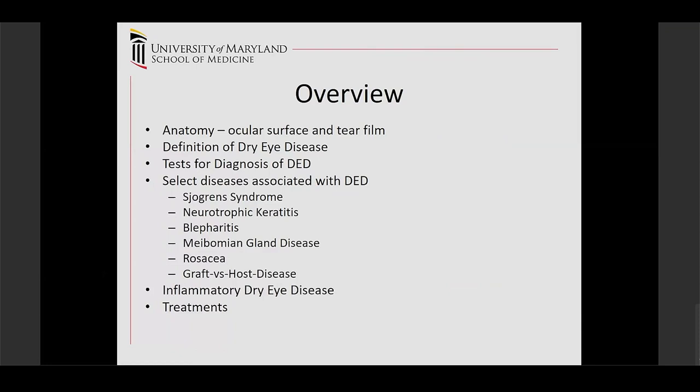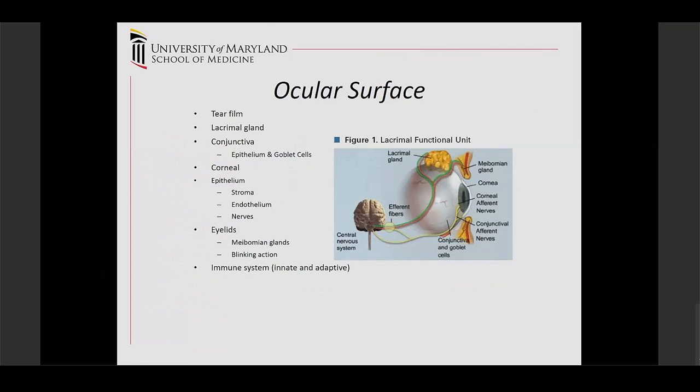The ocular surface really involves the tear film, the lacrimal gland, the conjunctiva — both the epithelium and goblet cells — the cornea, the clear part of the eye, including the corneal epithelium, which is the most involved area of the cornea, the eyelids including meibomian glands, and the immune system — both innate and adaptive immune systems are involved.